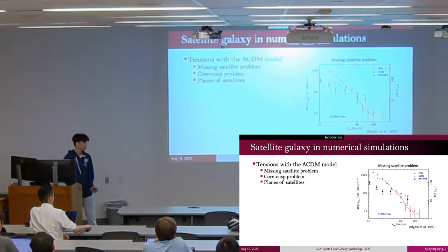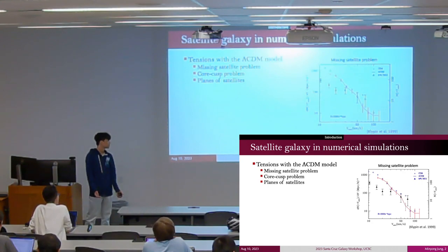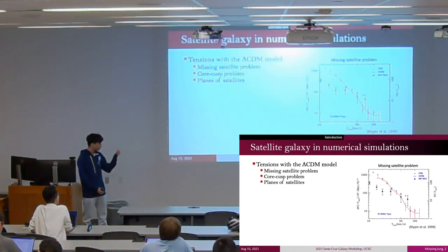The Lambda-CDM model, which encompasses both cold dark matter and dark energy, is widely considered the standard cosmological model. However, tension exists between the model and observational data, especially on the smaller scale.